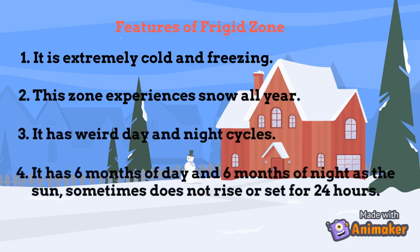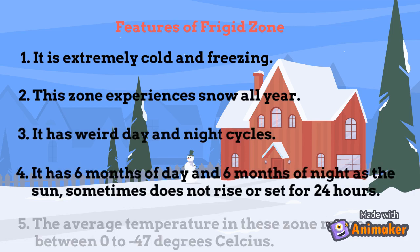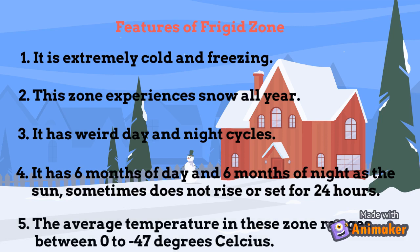The frigid zone has six months of day and six months of night, as the sun sometimes does not rise or set for 24 hours. The average temperature in this zone ranges between 0 to minus 47 degrees Celsius.